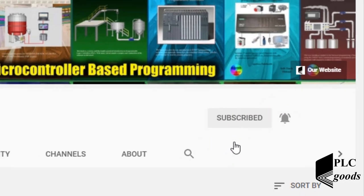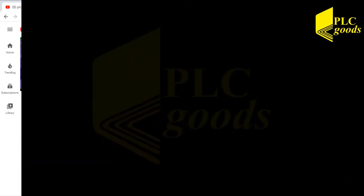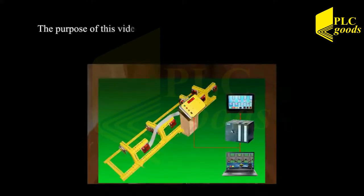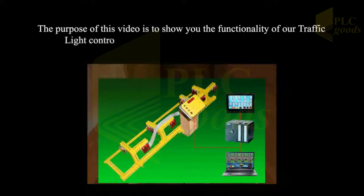Alright, let's start. The purpose of this video is to show you the functionality of our traffic light control system using a Siemens Simatic S7-300 PLC.